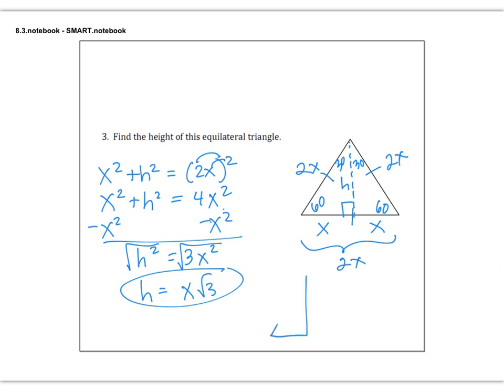Now here's what we just figured out — take a close look at the 30-60-90 triangle. This is 30, this is 60, this is 90. This side is x. The hypotenuse is double, or 2x. And what we just figured out is the height would be x times root 3. This is true for all 30-60-90 triangles — they will all have that same ratio.